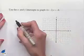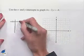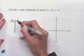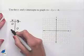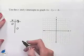To graph this, we're going to use a chart where we're going to let x equals 0 in order to find the y-intercept, and then we'll let y equals 0 in order to find the x-intercept. This requires us to substitute into the original equation.